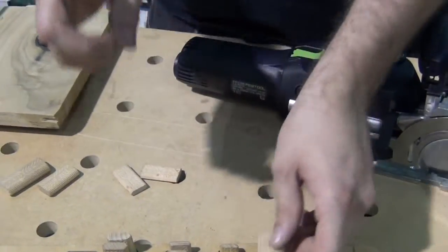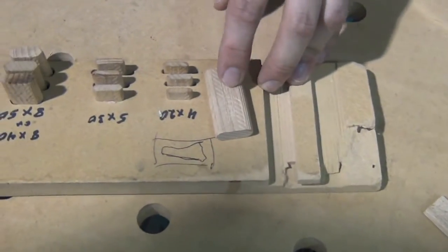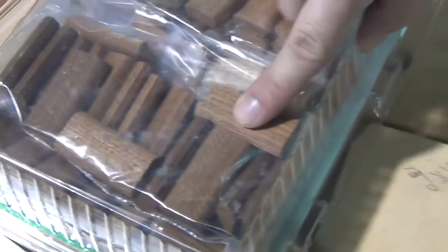These do a great job. Festool makes two different versions. One is your regular indoor domino made of beech and then these are your exterior made of Sipo.